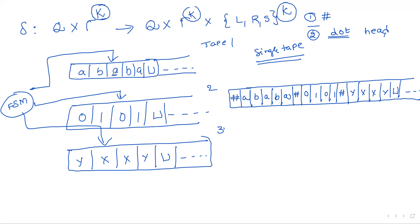The second important thing is using a dot operator to show where each tape head is. For example, in tape one, if the head is at the third cell, that cell is marked with a dot above it. In tape two, the dot marks the second symbol (zero). This dot notation represents the head position of each tape on the single-tape representation. To simulate a transition from state q, we scan all the symbols under the k tape heads.